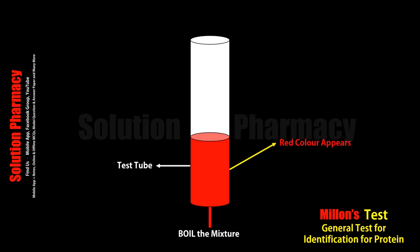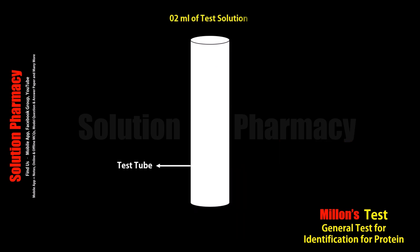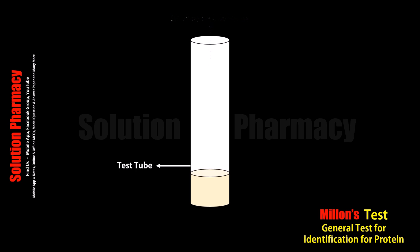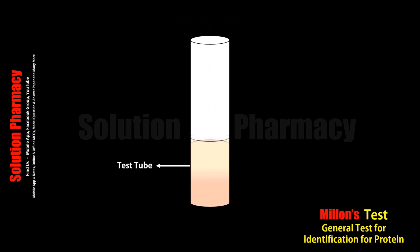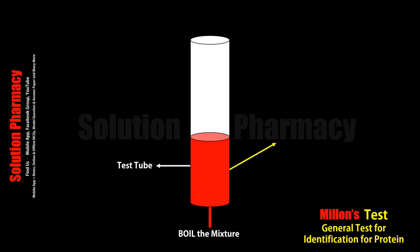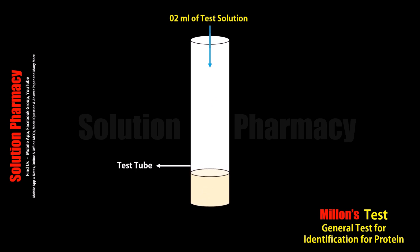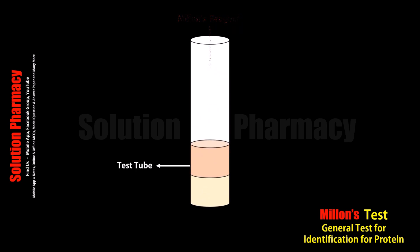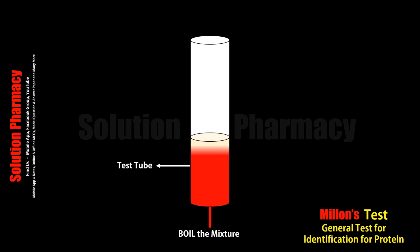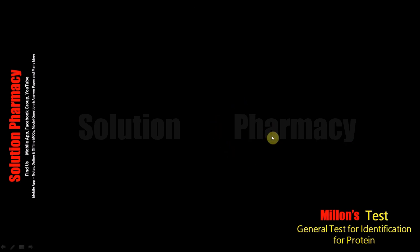Millon's test is used for the identification of protein containing tyrosine amino acid. In any protein sample, if we want to detect whether tyrosine amino acid is present or absent in it, then we can do it by performing Millon's test. So let's know how this Millon's test is performed.